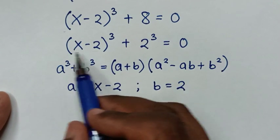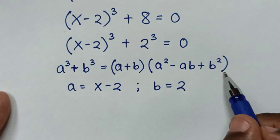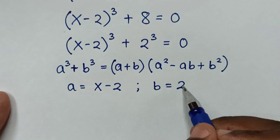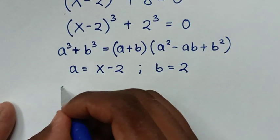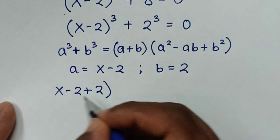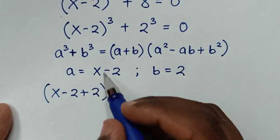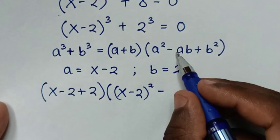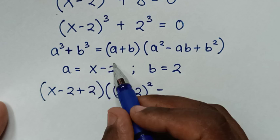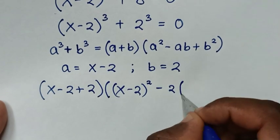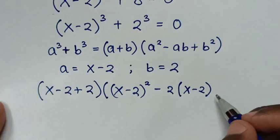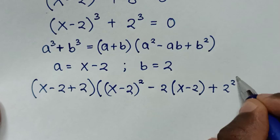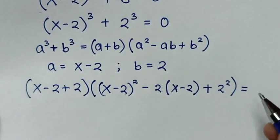Then, because it is in this form, we'll substitute: a + b will be (x - 2) + 2. Then the second bracket: a² is (x - 2)², minus ab which is 2(x - 2), plus b² which is 2², all equal to 0.